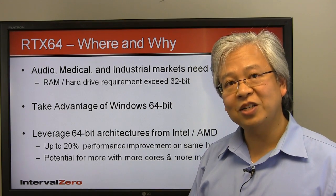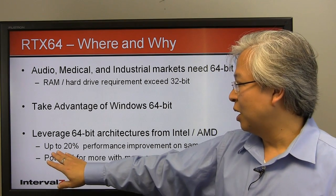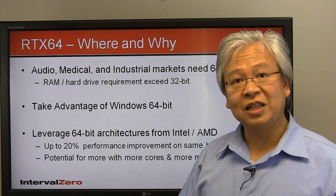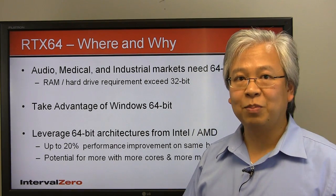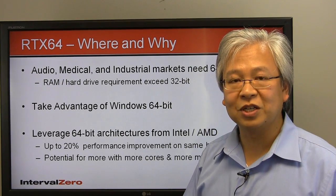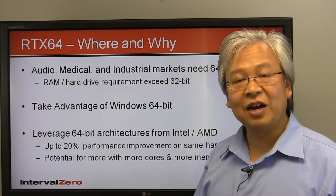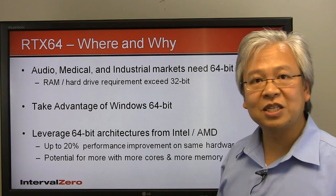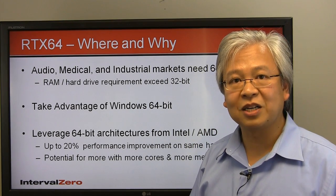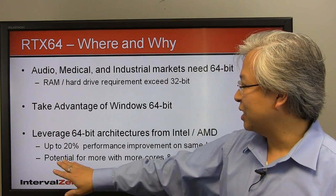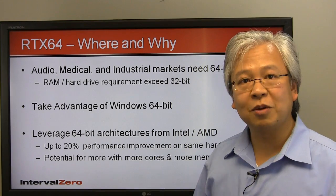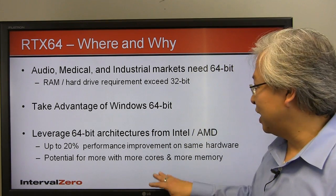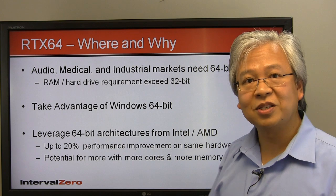In some of our earlier tests with RTX 64, our customers saw up to 20% performance increase running the exact same hardware as their previously built 32-bit versions of RTX. A lot of this comes from optimization, but really also from just taking advantage of the 64-bit architecture itself. They were very excited to see this because it points to the potential of even more processing power by utilizing even more cores and more memory.